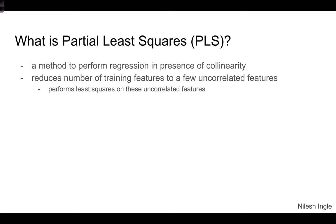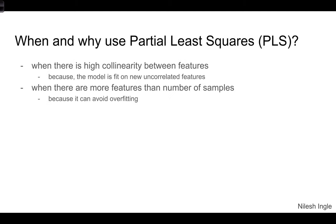So what is partial least squares? It's a regression method where the input features could be collinear or correlated with each other, and there could be one or more output targets. The way this method works is it reduces the number of training features into a few uncorrelated features and then performs least squares on these reduced features.